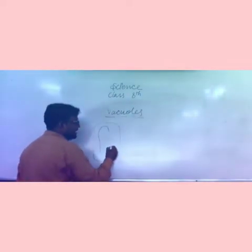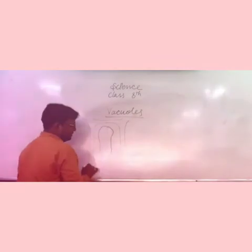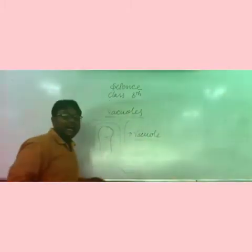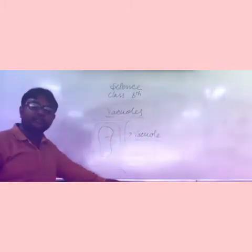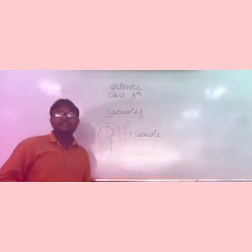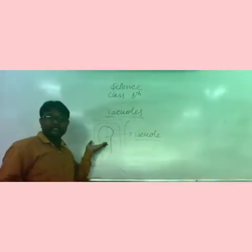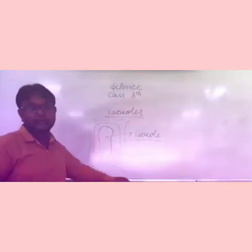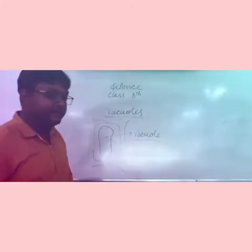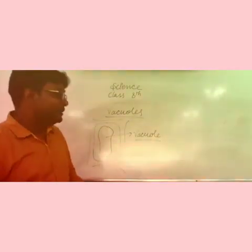Plant cells have large and prominent vacuoles. This large vacuole in plant cells helps in the storage of many things. Water is stored in it because plant cells require more water for functioning and for the photosynthesis process. These vacuoles also store sugars and minerals.